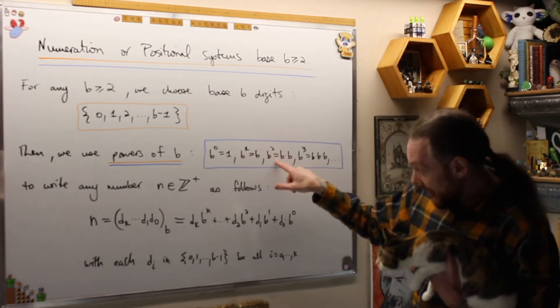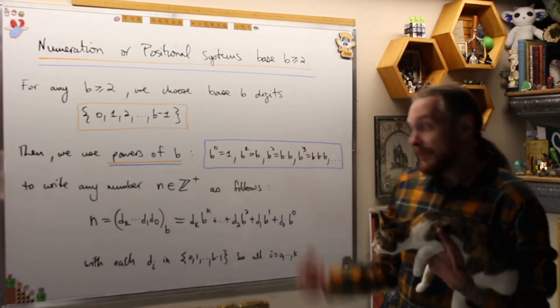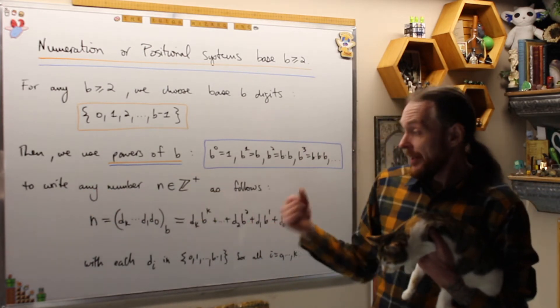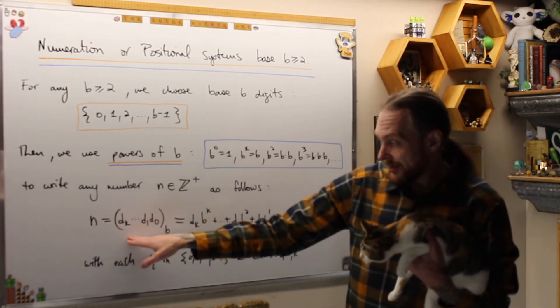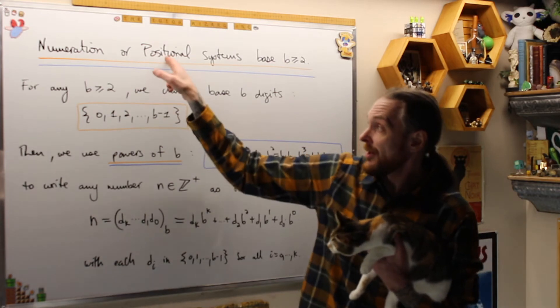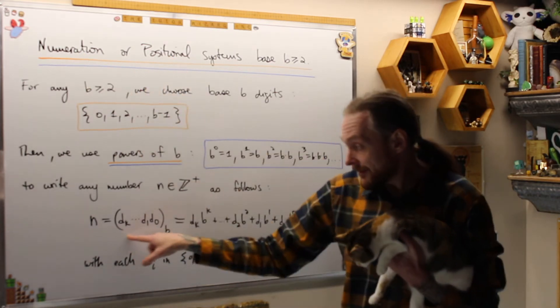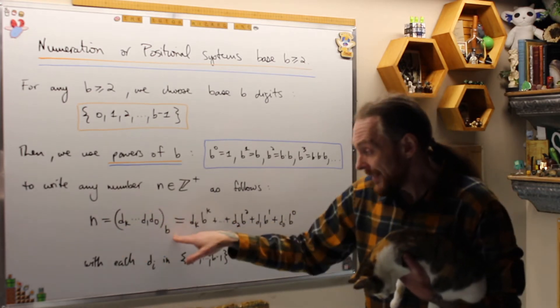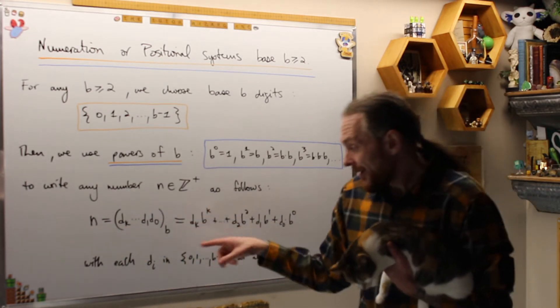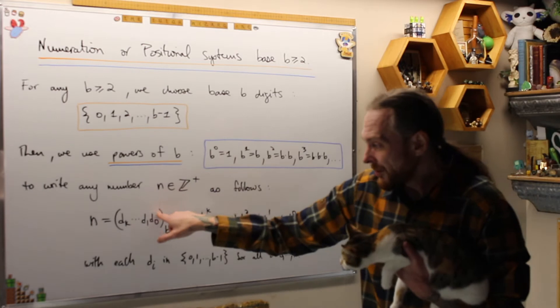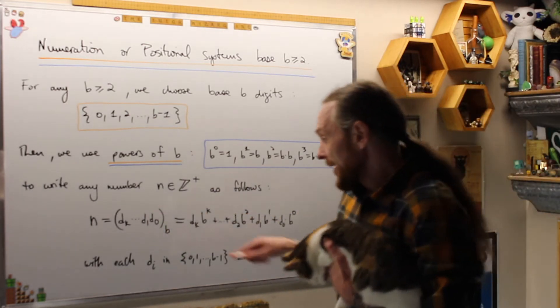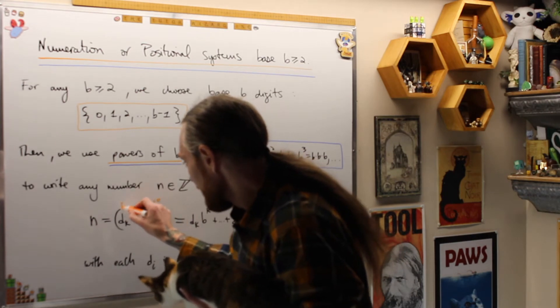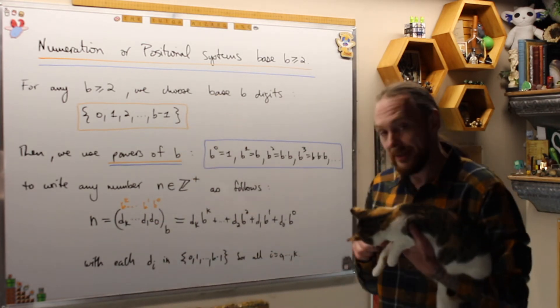In decimal we call this the 1 spot, the 10 spot, the 100 spot, the 1000 spot. Once we have that, we can write any positive integer as follows. N is equal to this positional system, what we're going to call positional or numeration system, a string of digits essentially. Then we write brackets to indicate base B. What that really means is we're multiplying by increasing powers of B, B to the 0, B to the 1, dot dot dot, B to the K.